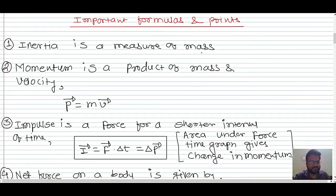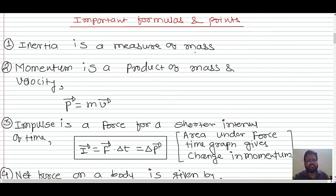Welcome to my channel Physics Tricks. Let's start with important formulas and points related to the Laws of Motion and Friction chapter. First point: inertia is a measure of mass. Inertia is the inability of a body to change its state of rest, state of motion, or state of direction.